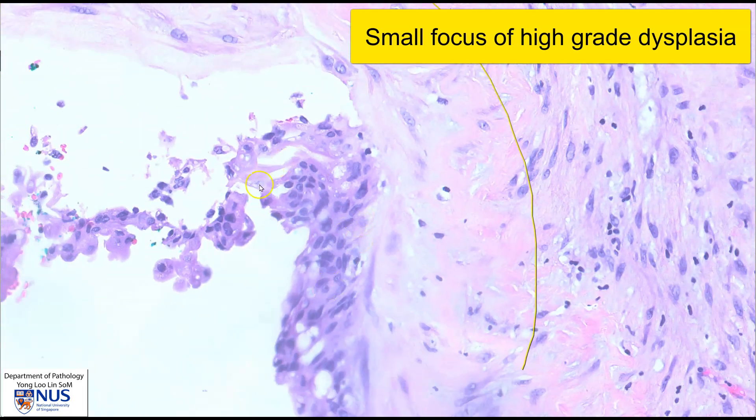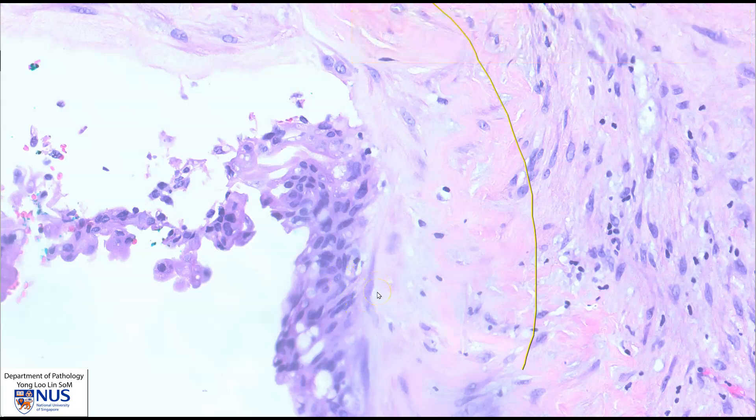This is a very small focus of high-grade dysplasia in this mucinous cystic neoplasm. So there can be a range of dysplasia from low to high. And in a small percentage of cases, there may also be invasive adenocarcinoma arising in mucinous cystic neoplasms. Let's learn a bit more about mucinous cystic neoplasms.